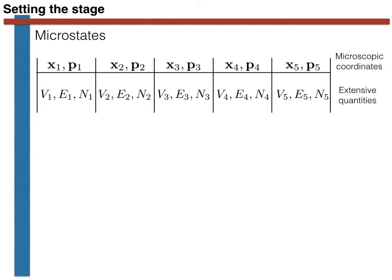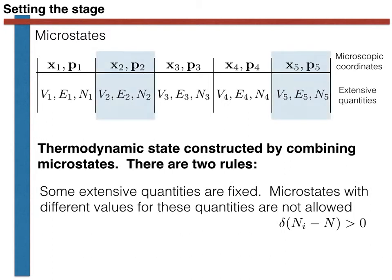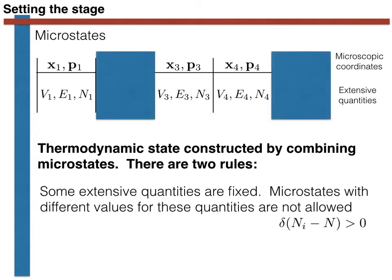I then argued that we could construct thermodynamic states from microstates by applying two kinds of constraints on the system. The first thing we did was to fix some of the extensive variable values and require them to have a particular value of interest. We said that doing so made some of the microstates in phase space completely inaccessible. In our example, the blue squares covered two of the microstates because these two microstates had the wrong number of atoms.